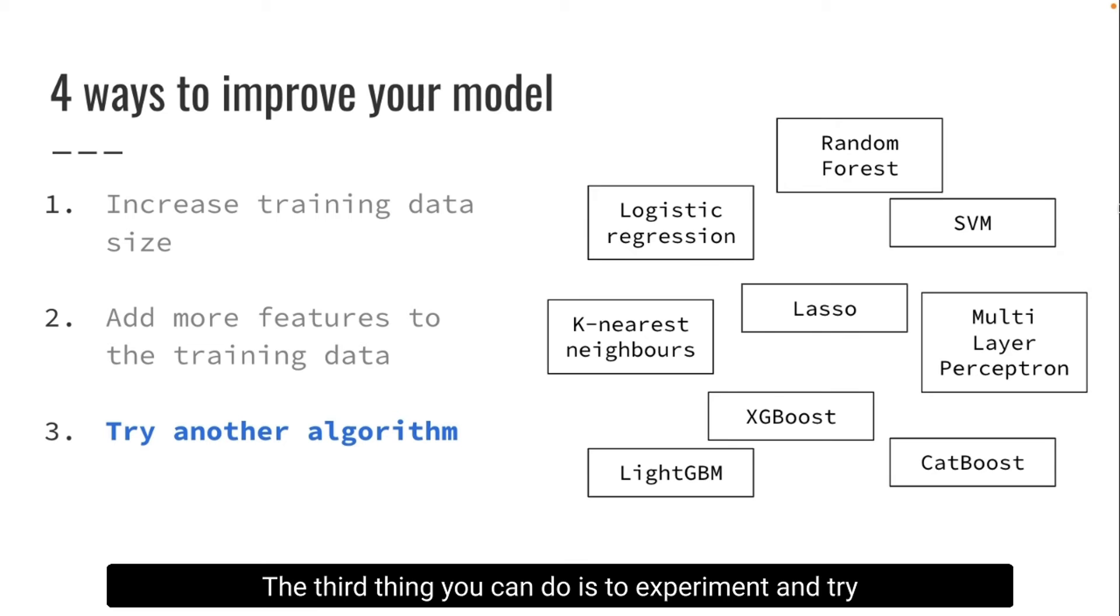The third thing you can do is to experiment and try to use a different algorithm to build your model. So there are lots of algorithms nowadays, from very simple ones like logistic regression to very complex ones like multi-layer perceptrons, which are essentially neural networks.